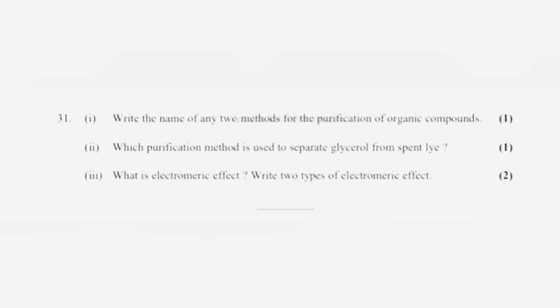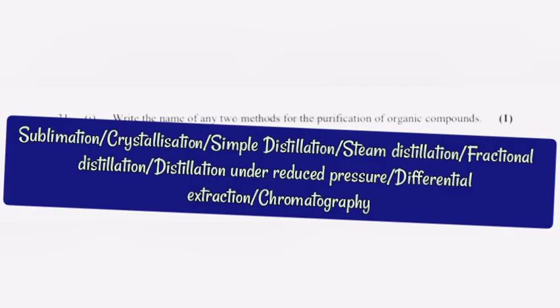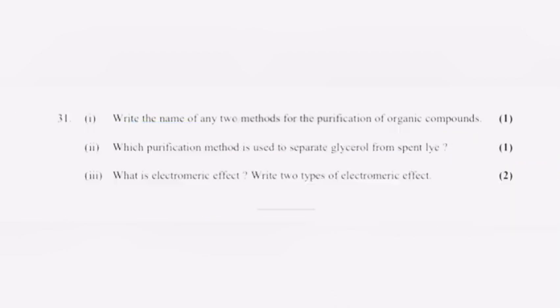Question 31, part 1: Write the name of any two methods for the purification of organic compounds. Answer: Sublimation or crystallization or simple distillation or steam distillation or fractional distillation or distillation under reduced pressure or differential extraction or chromatography. Write any two. Part 2: Which purification method is used to separate glycerol from spent lye? Answer: Distillation under reduced pressure.